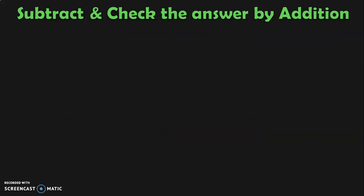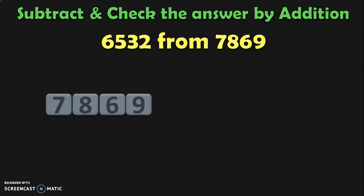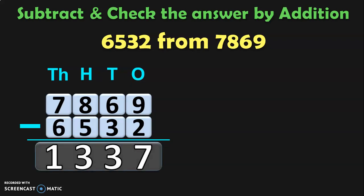Subtract and check the answer by addition: 6532 from 7869. Write down the number from which you are going to subtract and its place values, then write down the other number. Begin the subtraction from the 1s place. 9 minus 2 is 7. In the 10s place, 6 minus 3 is 3. In the 100s place, 8 minus 5 is 3. And in the 1000s place, 7 minus 6 is 1. So the difference between the two numbers is 1337.